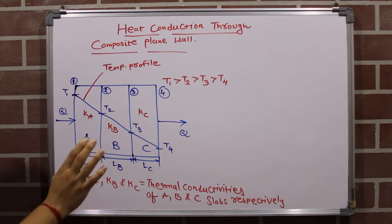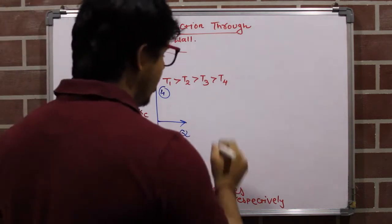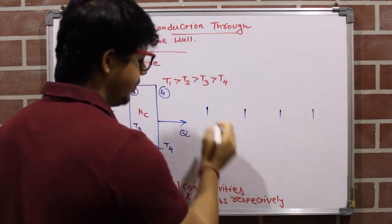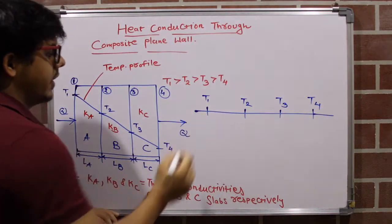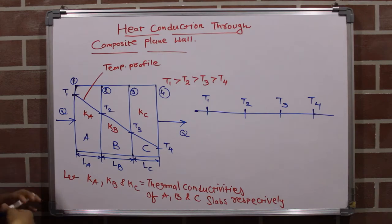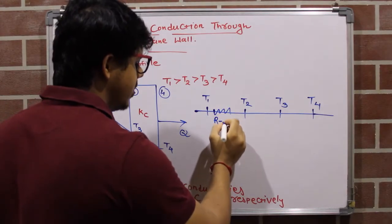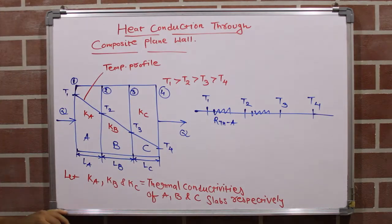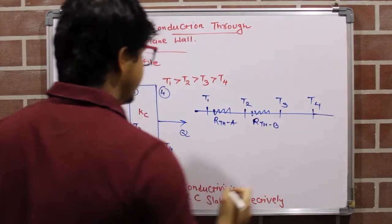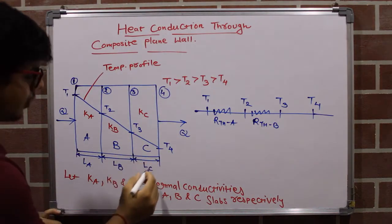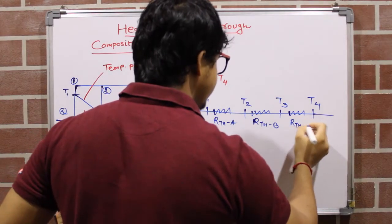There are four temperatures here: T1, T2, T3, and T4. So we draw four lines representing T1, T2, T3, and T4. The thermal resistance between T1 and T2 is the thermal resistance of wall A, marked as Rth_A. The thermal resistance between T2 and T3 is the thermal resistance of wall B, marked as Rth_B. The thermal resistance between T3 and T4 is the thermal resistance of wall C, marked as Rth_C.